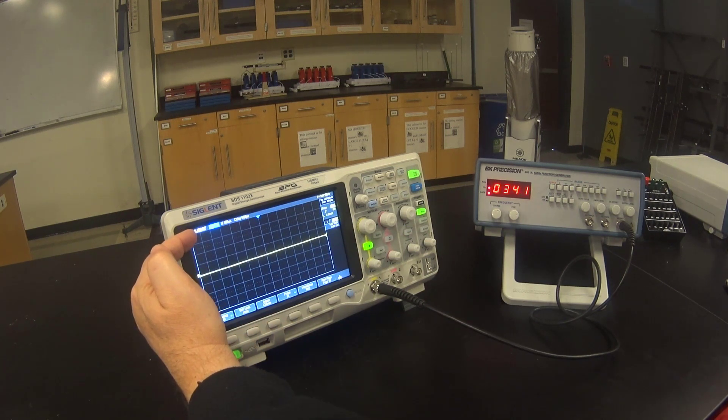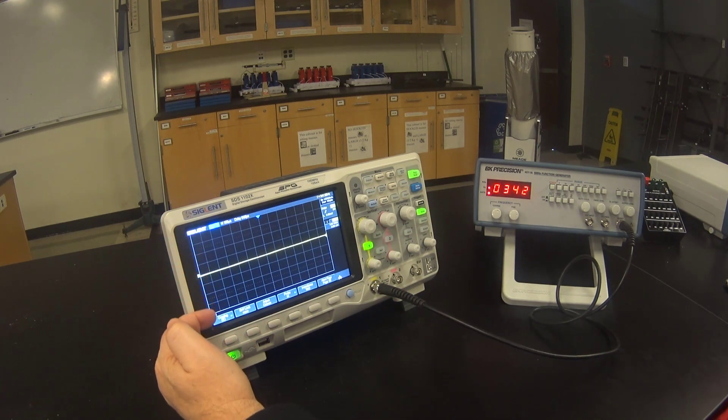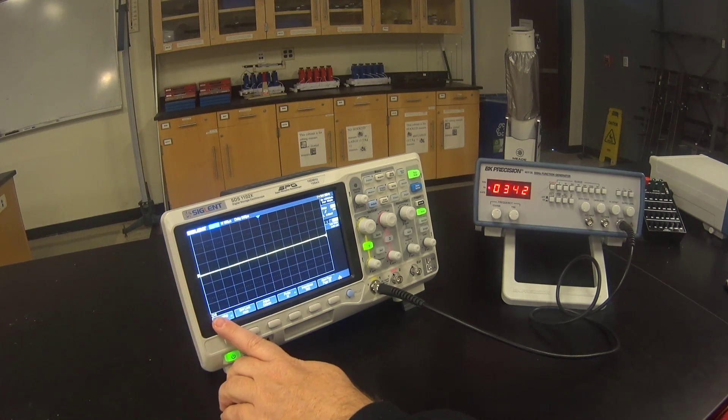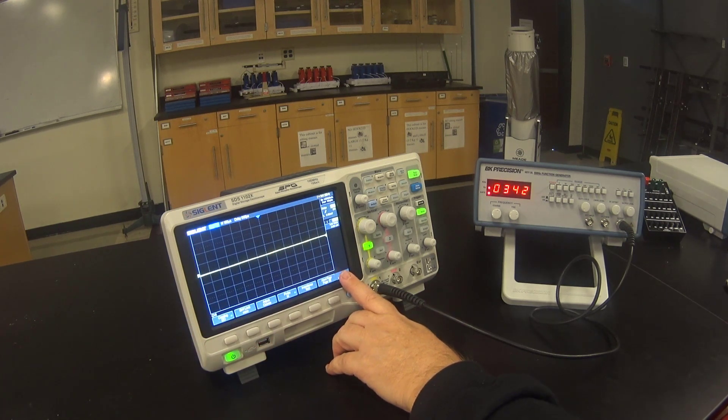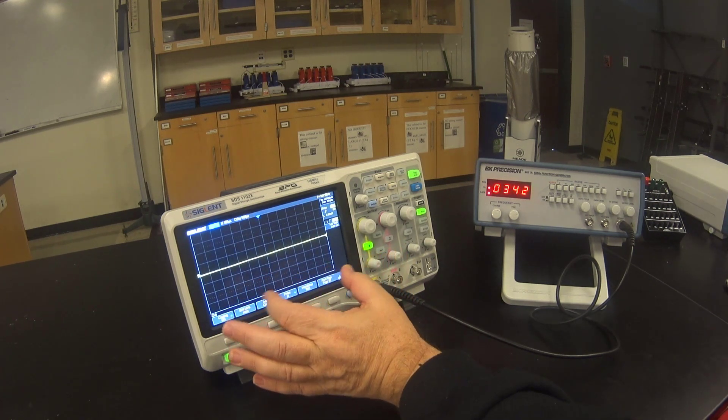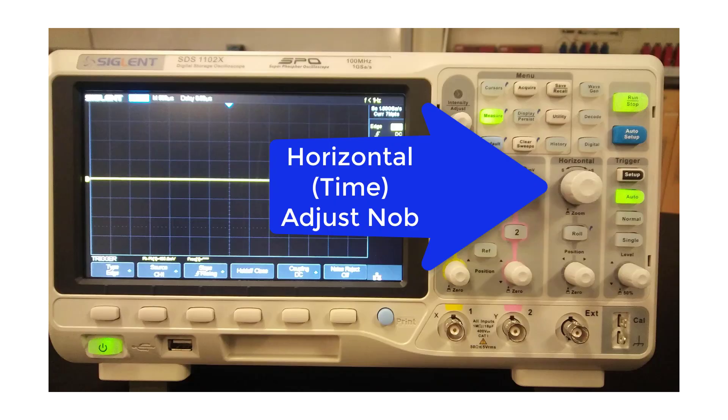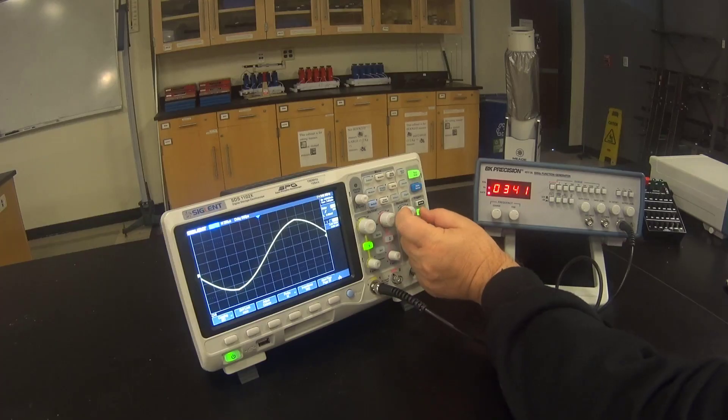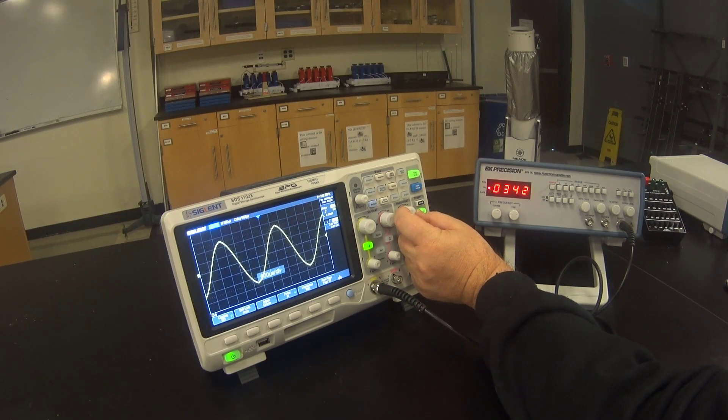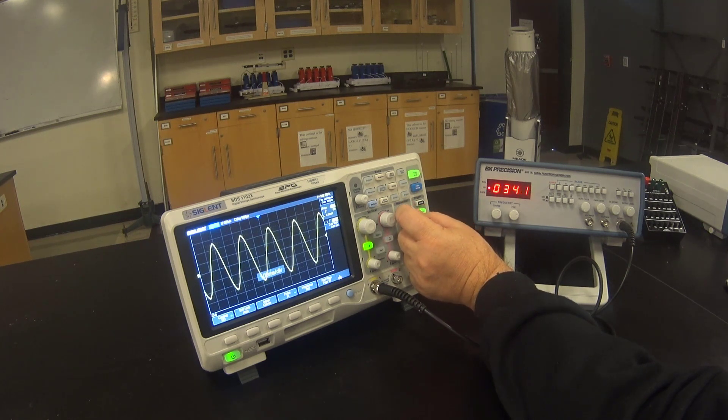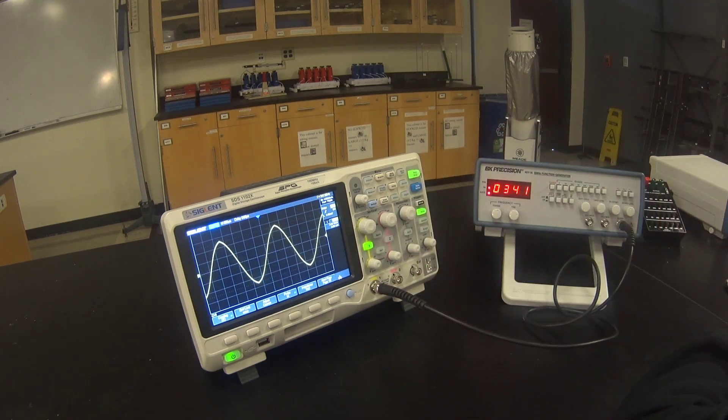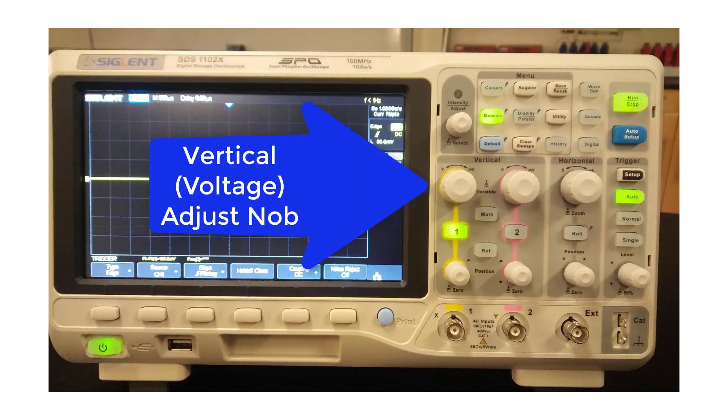The oscilloscope is like a graph measuring voltage along this axis and time along this axis. We can compress or expand the display using the horizontal or time adjust knob. Turning it counter clockwise compresses the timeline and turning it clockwise stretches the timeline. The vertical or voltage adjust knob stretches and compresses the vertical axis.